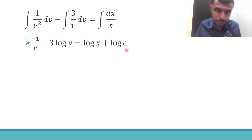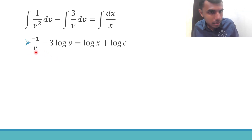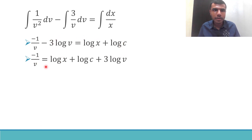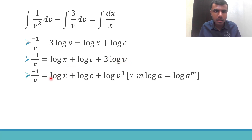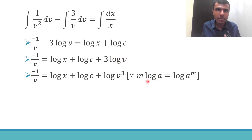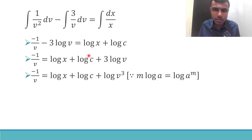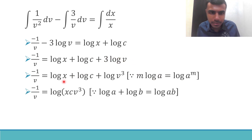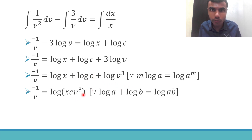Send minus 3 log v to the RHS: minus 1/v equals log x plus log c plus 3 log v. Now 3 log v can be written as log v³, because from logarithms we know m·log a equals log a^m. So log x plus log c plus log v³ equals log(x·c·v³).